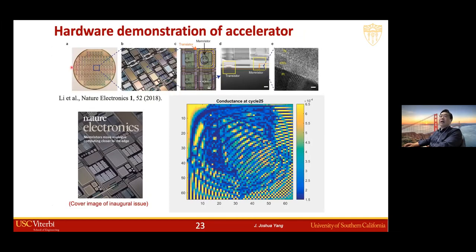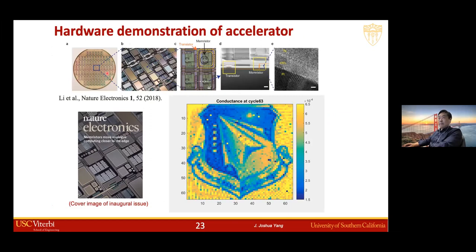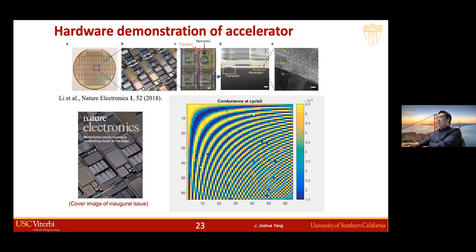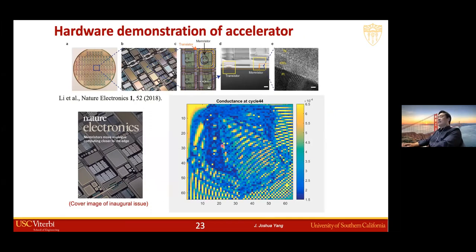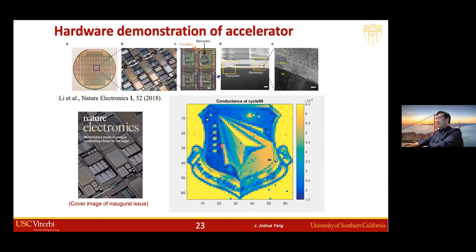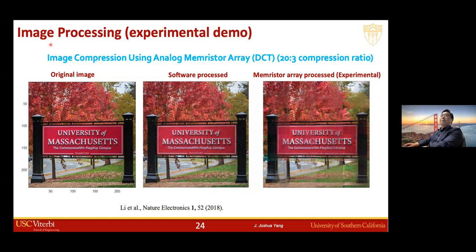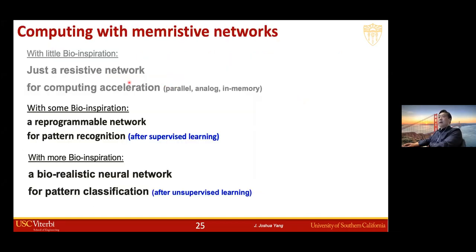To demonstrate this, we built our hardware. This is the wafer and a zoom-in of the circuit, with each cell having a transistor as a selector combined with a memristor in series. We can freely program the array — for example, the pattern shown is a DCT discrete cosine transform operator, which you can use for linear algebra acceleration. For example, you can do image compression. Here is the original image; here is the image compressed using the crossbar array experimentally. We also compressed the image with software to the same compression ratio. As you can see, they are quite comparable. It is much more efficient to perform computing this way.